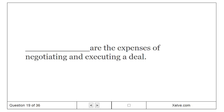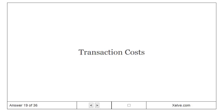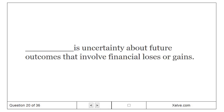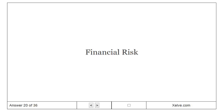Transaction costs are the expenses of negotiating and executing a deal. Financial risk is uncertainty about future outcomes that involve financial losses or gains.